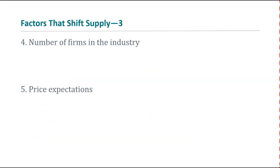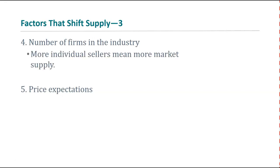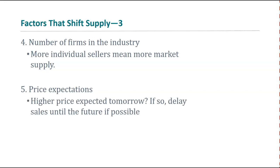Other things that shift supply: the number of firms in the industry — more sellers means more supply, so a new burger joint moving into town means more burgers in the market. Finally, price expectations: what you think will happen tomorrow affects what you do today. If you expect to get a higher price tomorrow, you might hold back supply today. If you expect the price to fall tomorrow, you push product today and supply may increase. Those are the main factors that shift supply.